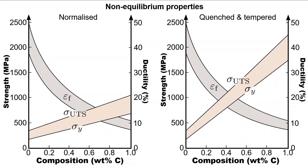Let's now compare the effects of two processing routes: one on the left, which we've already looked at in part one, where the steel is normalized to form an equilibrium microstructure, and one on the right where different thermal processing is carried out. By quenching and tempering steels with varying contents of carbon, one can achieve significantly elevated strengths while maintaining the same response regarding ductility. We can attain roughly equivalent effects regarding the improvement in strength versus the decrease in ductility by quenching and tempering.